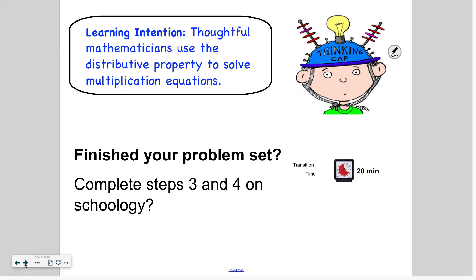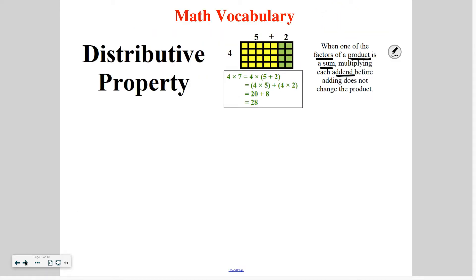So let's look at our learning objective for today. Thoughtful mathematicians use the distributive property to solve multiplication equations. So let's refresh our memory. The distributive property says if only one of the factors of a product is a sum, multiplying the addends before adding does not change the product. So what that means is I can break apart one of the factors, or decompose them to be smaller numbers that are easier for me to multiply. So in this case, in this diagram that we have here, they've broken apart the seven to be five and two, because I know my five times tables and counting by twos is very easy. So I can do five times four, and that gives me 20 here, and then four times two, and that gives me eight, and then I add them together, and I get my product of 28. So I'm able to break apart one of the numbers, only one, I don't do both, to be able to make it easier to solve.